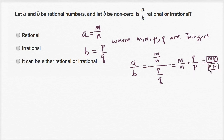The product of two integers is an integer. So I've just shown that A over B can be expressed as the ratio of two integers. So A over B is for sure — in fact, I've just proven it — A over B is for sure going to be rational.